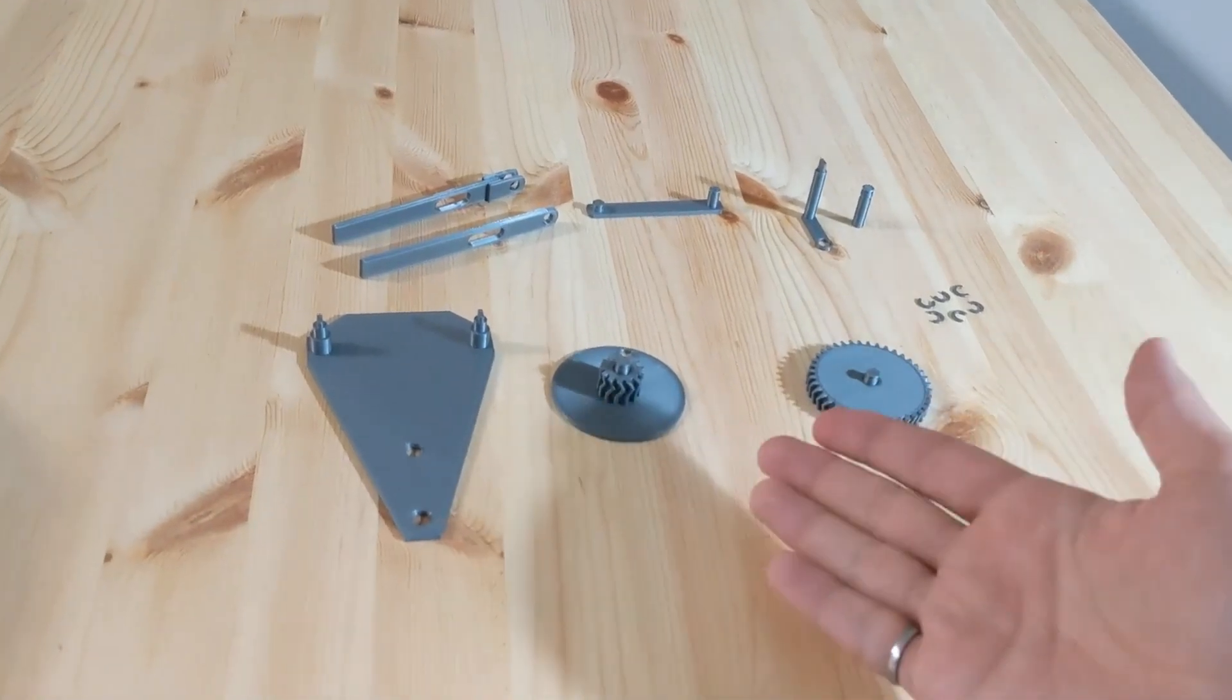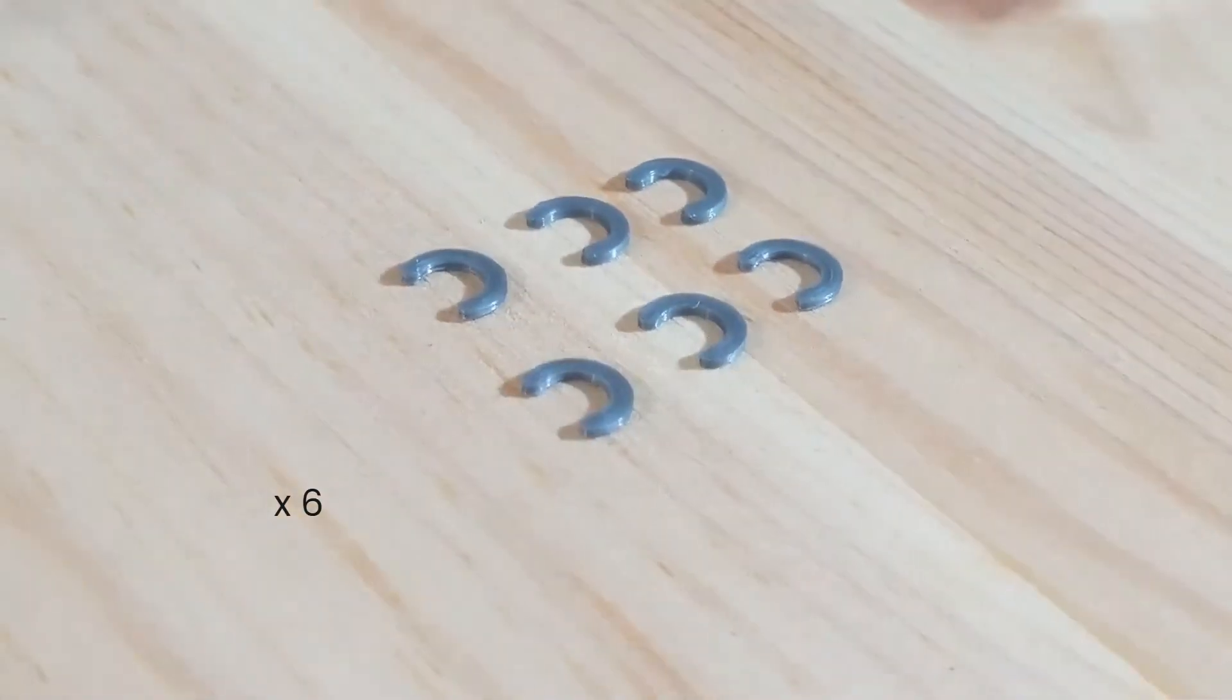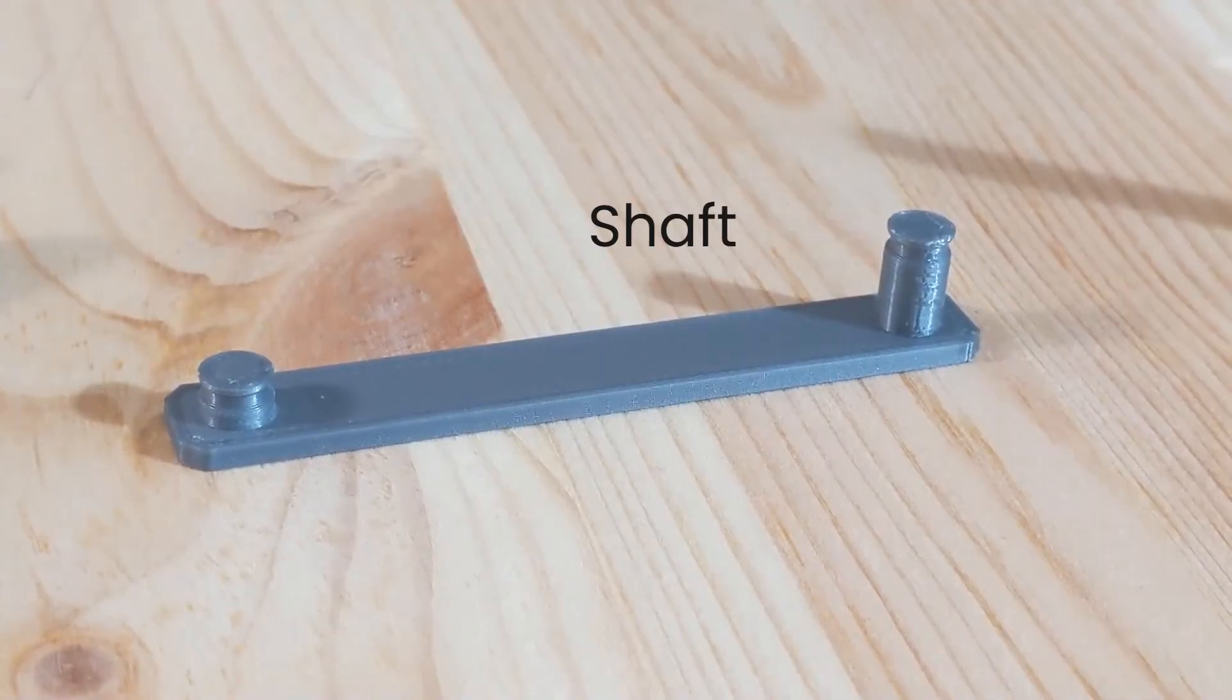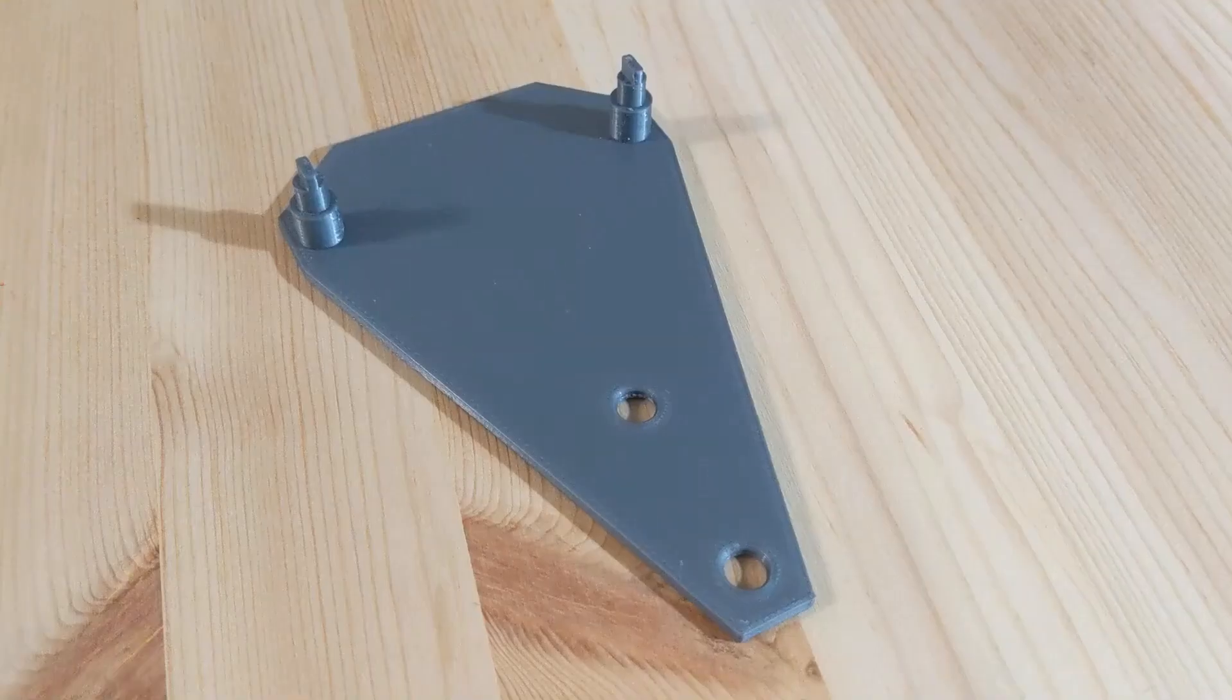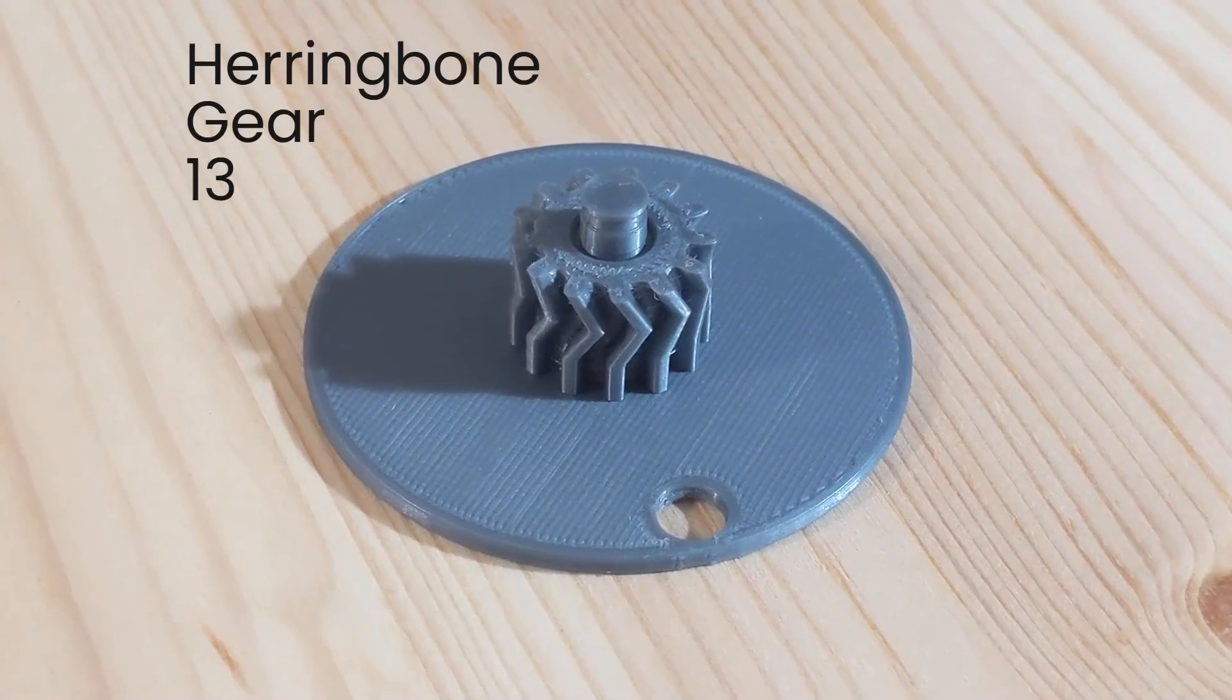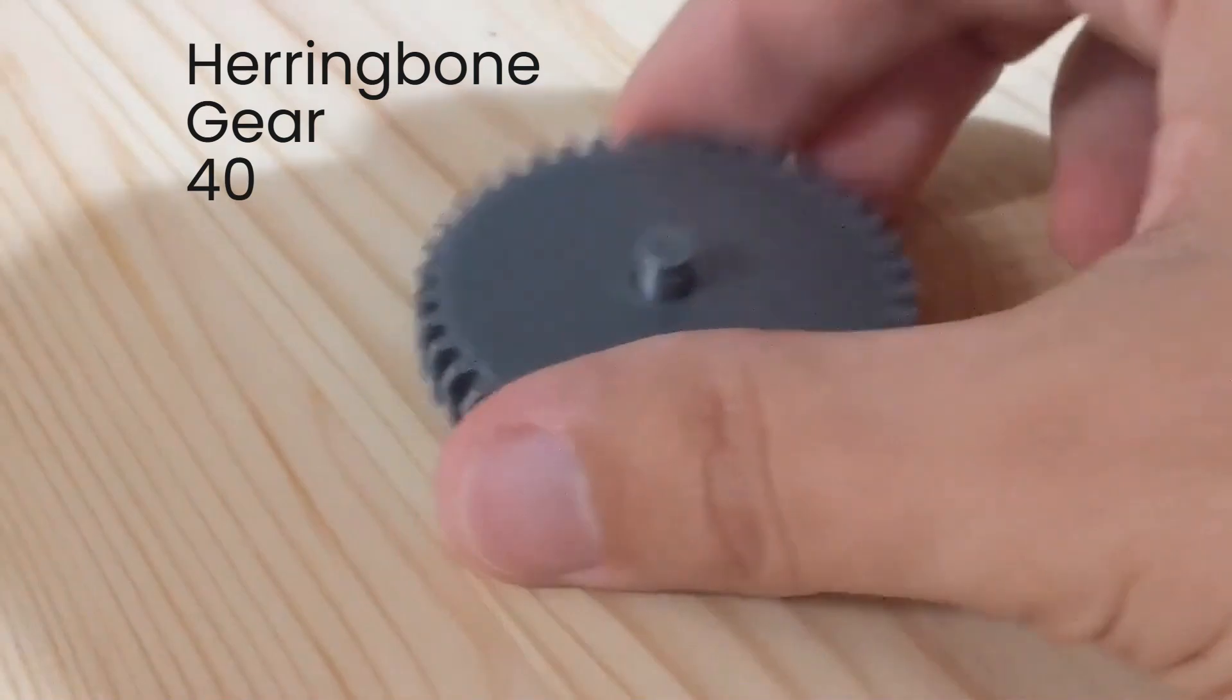So first up, we need to print off all our pieces. In particular, you will need six retaining rings, a manual crank and the manual crank handle, the shaft, wings parts A and B, the structural backing plate, the 13-tooth herringbone gear, and the 40-tooth herringbone gear, which is going to be the part we start with.